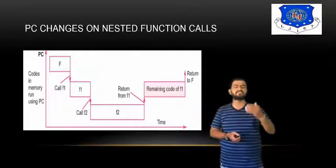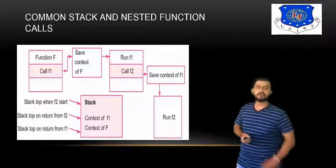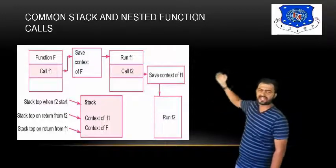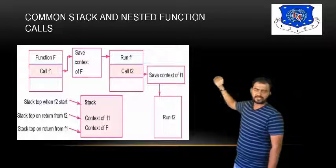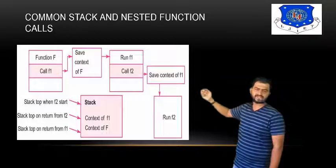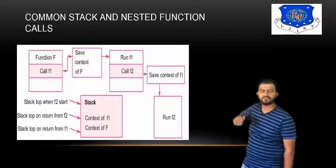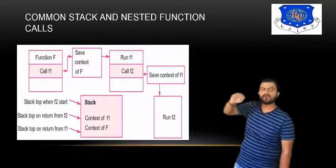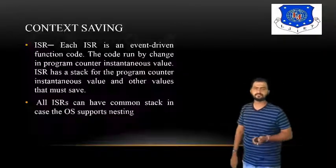For common state and nested functions: function f calls f1, saves the context of f, runs f1, then calls f2, saves the context of f1, then runs f2. Once f and f1 run, context saves in function f; when f2 runs, context saves in function f1.